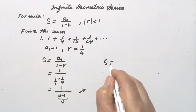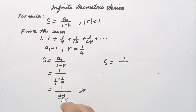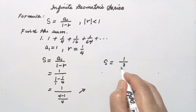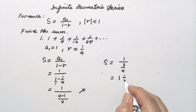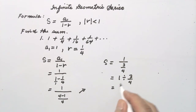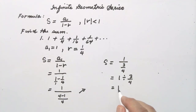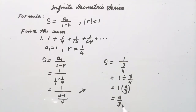So S is equal to 1 over — this equals 4 minus 1, which is 3 over 4. This can be written as 1 divided by 3/4. Change division to multiplication and invert the divisor, so this is 1 times 4/3, which equals 4/3. So the sum is 4/3.